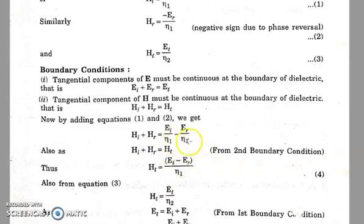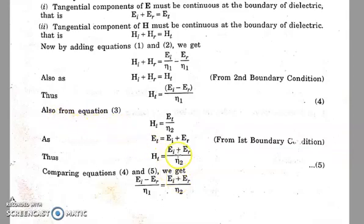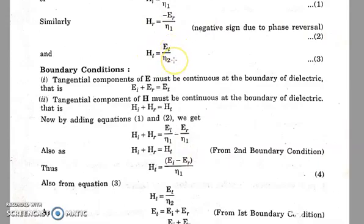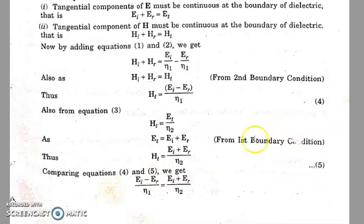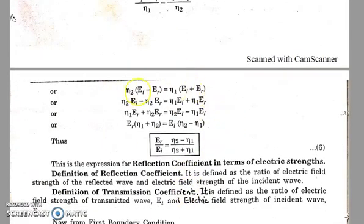Taking eta1 as common, and from equation 3, HT = ET / eta2. From the first boundary condition, ET = EI + ER, so HT = (EI + ER) / eta2. Comparing equation 4 and equation 5, we can write (EI - ER) / eta1 = (EI + ER) / eta2.